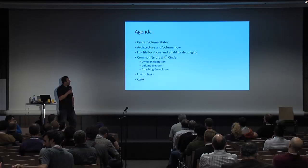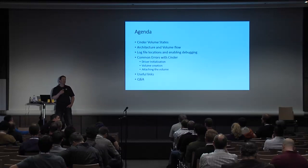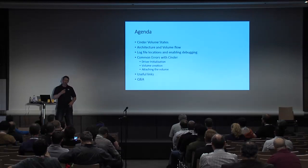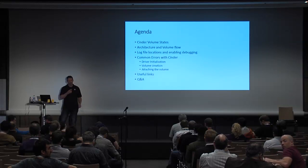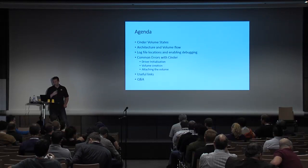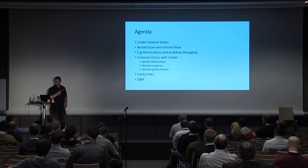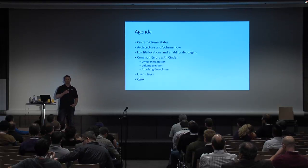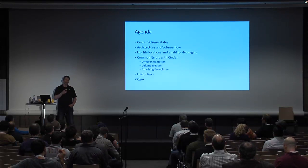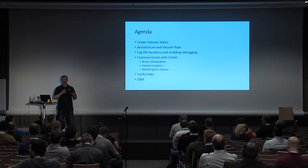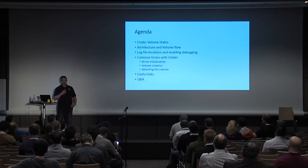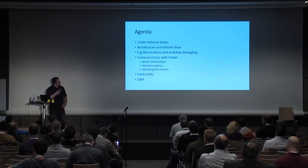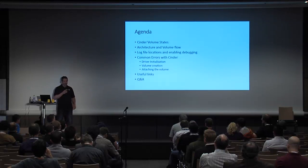For the agenda, I'd like to go over the Cinder volume states. There's quite a few of them — you'll usually see these in the log file, but most noticeably in Horizon. I'll briefly go over the architecture and volume flow, as well as log file locations for the Cinder volume, Cinder scheduler API, and during attachments where those errors may occur over in the Nova log. Then I'll invite Jay on stage to go through common errors with Cinder. Walt will cover attaching issues with iSCSI and Fiber Channel, and then we have some useful links and will take Q&A.